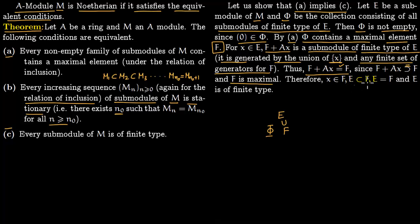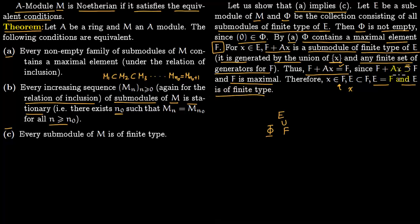So for every element x picked in E we have F + Ax = F, meaning x lies in F. Therefore E is contained in F. Since F is also contained in E, we get E = F. And since F is of finite type, E is of finite type. This completes the proof that A implies C.